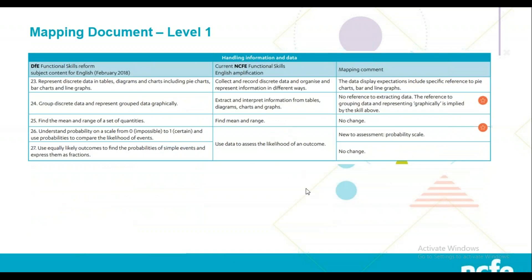Looking at handling information and data for Level 1 — the biggest change is using a probability scale. Previously learners worked out theoretical probabilities; now they'll need to use a probability scale from zero to one, where impossible events sit at one end and certain events at the other. Learners could be asked to place events or fractions on a probability scale. There's also a new specific reference within point 24 to grouping discrete data and representing grouped data graphically — this will now be examined and assessed.